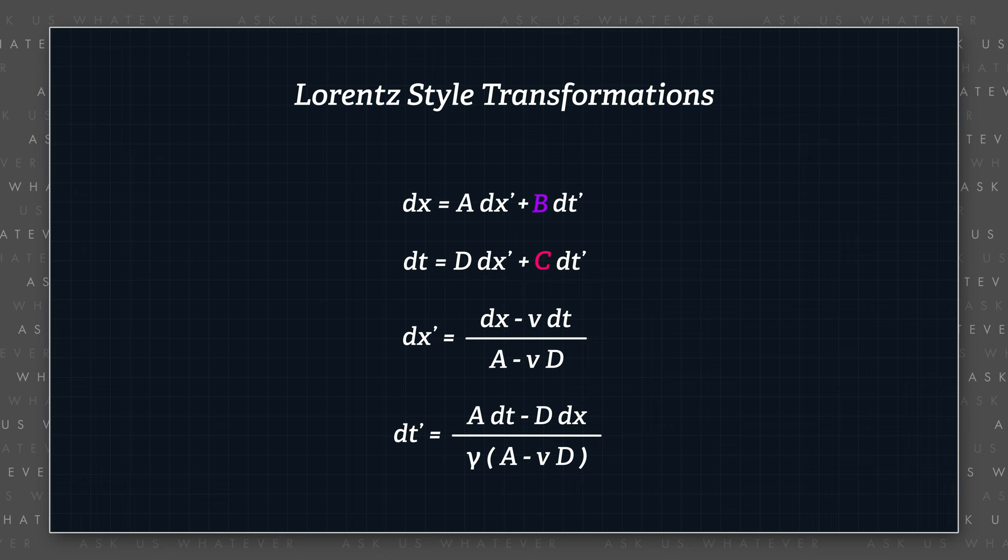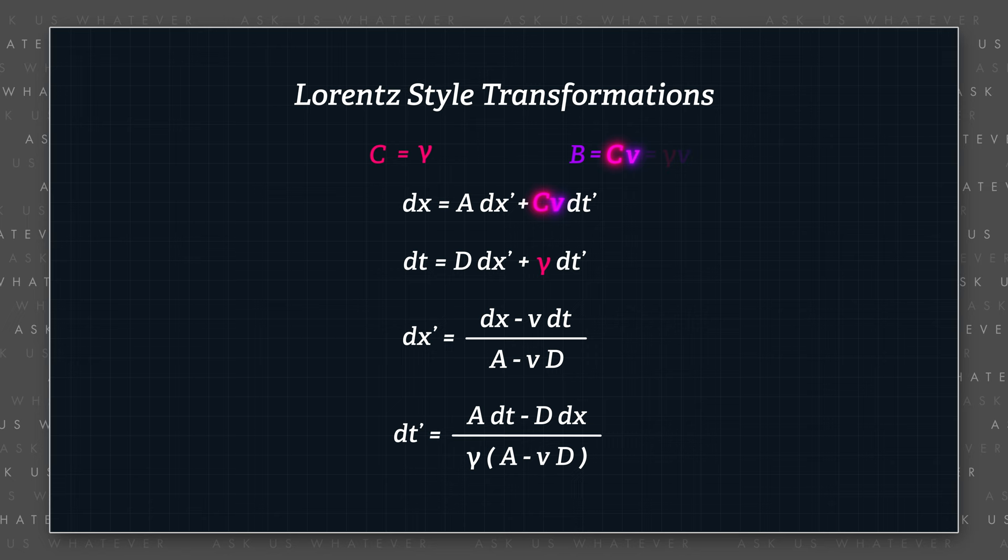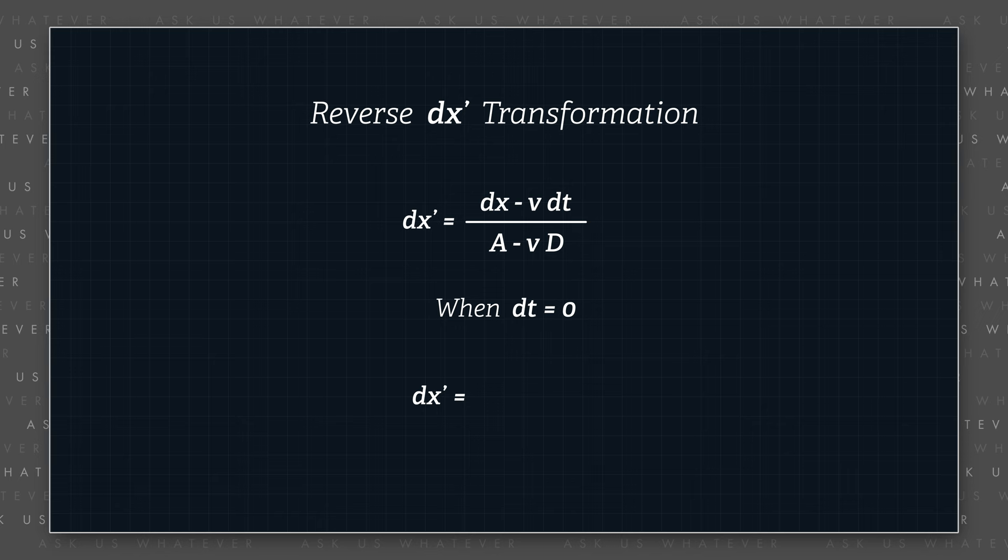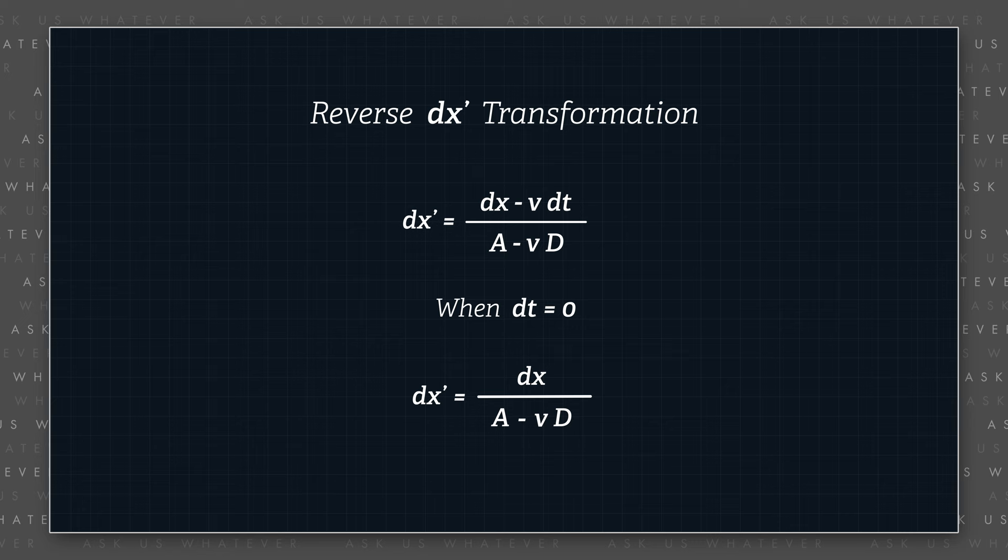Okay, to derive the alternative model transformations, we will piggyback on the derivation of the longitudinal Lorentz transformations up to the point where capital C equals some type of time dilation factor, which we will call gamma for now, and that capital B equals capital C times V. That gets us to these generic formulas for Lorentz-style transformations. So when dt is zero, the dx prime reverse transformation becomes dx divided by capital A minus V times capital D. Note that I called it a reverse transformation, not an inverse transformation. I'm not making any assumptions about symmetry between primed and unprimed transformations.